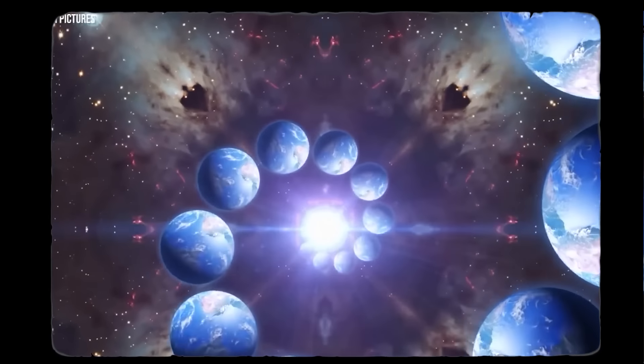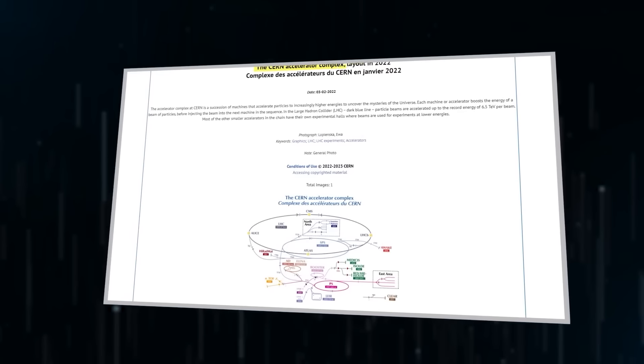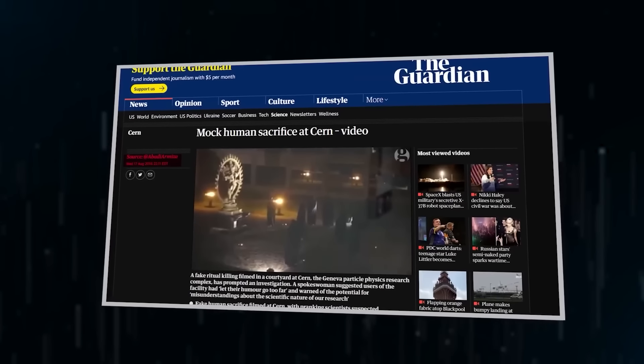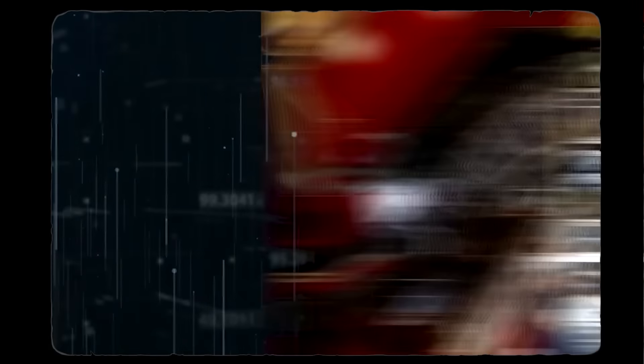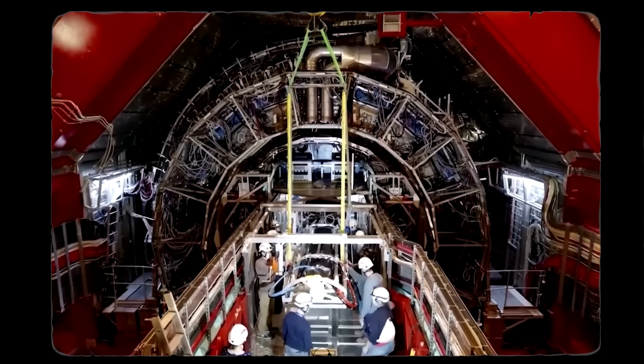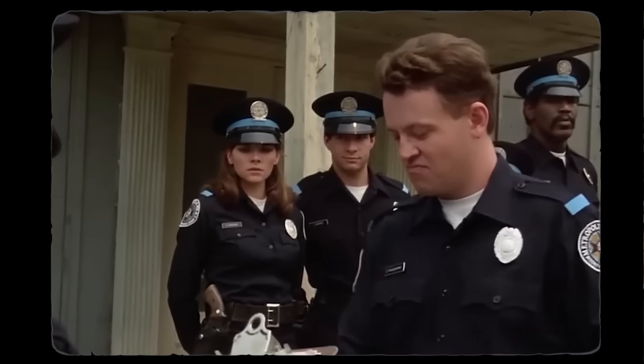Lastly, some conspiracy theorists allege that human sacrifices occur at the CERN complex. In 2016, a video purportedly surfaced online claiming that ritual sacrifices were taking place at CERN. The footage allegedly depicted several cloaked figures wandering the CERN grounds, with speculation suggesting that a young girl was being stabbed in the chest by these figures. The Guardian reported that, at the time, a CERN spokesperson refuted the claim, stating that the ritual was staged as part of an elaborate prank. Whether a police investigation ensued remains unanswered.